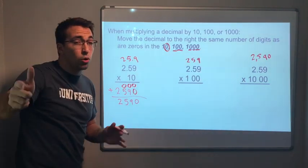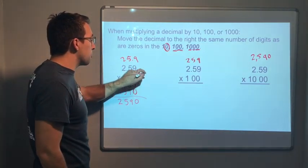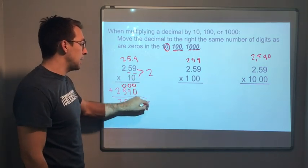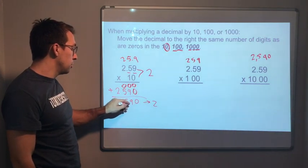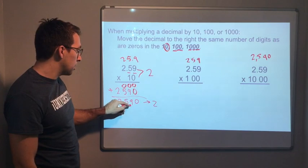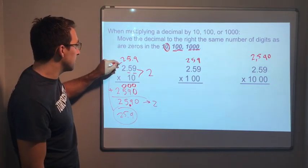But we know whenever we're multiplying decimals, the same number of decimals in the problem, that's two, one, two decimals, is going to be the same number of decimals in the answer. Two decimals. So one, two. Two decimal places. So look. Twenty-five point nine. That's our answer. It's the same thing.